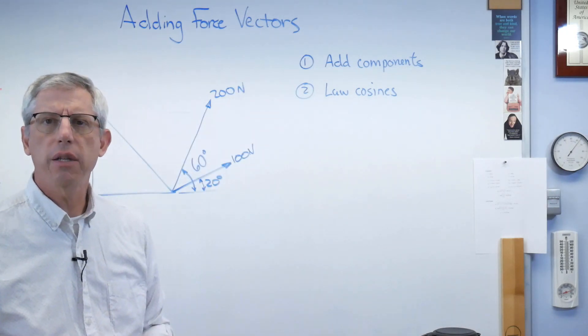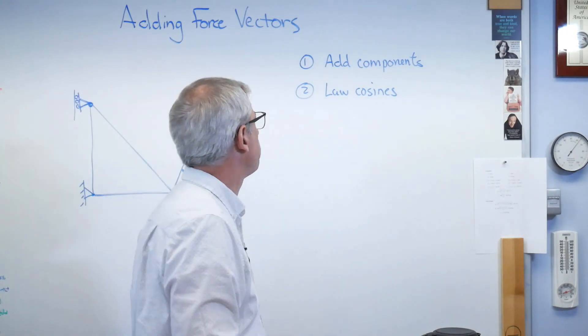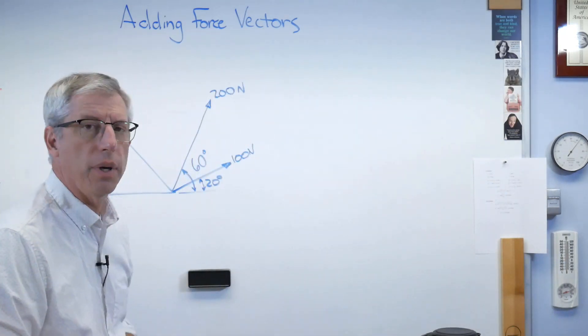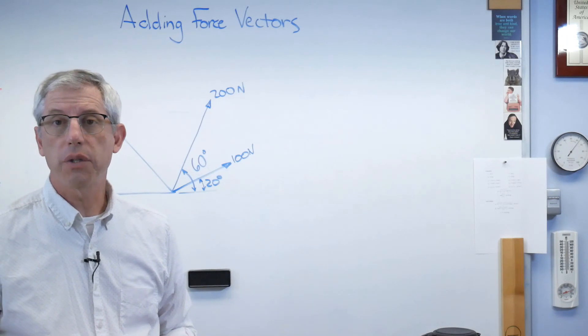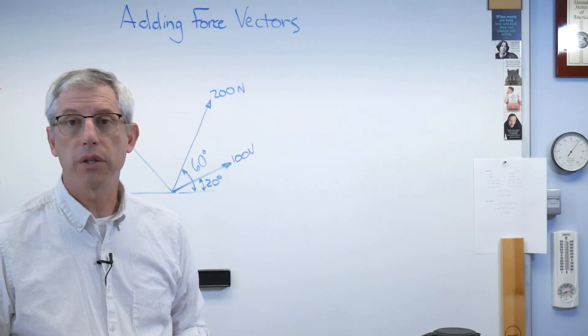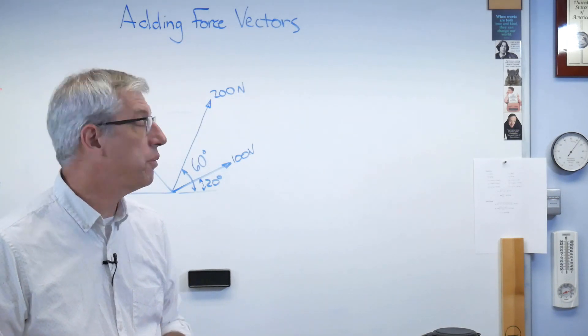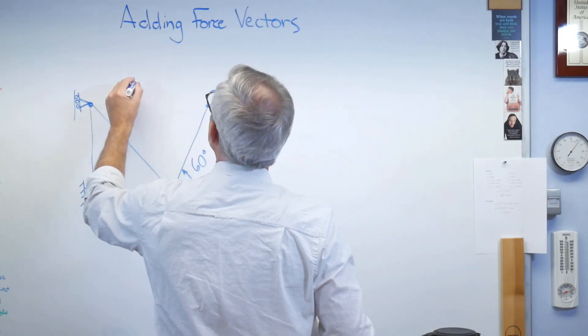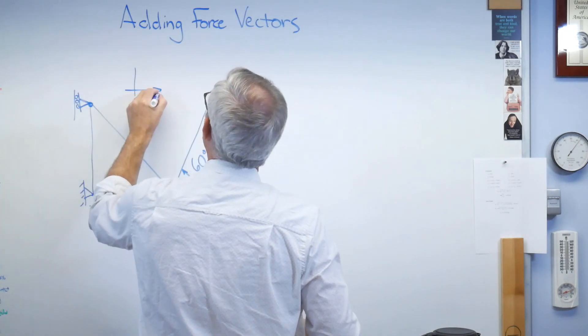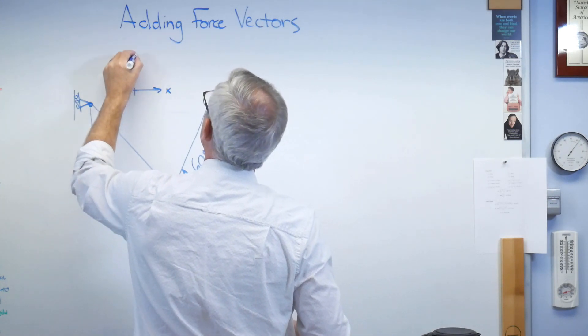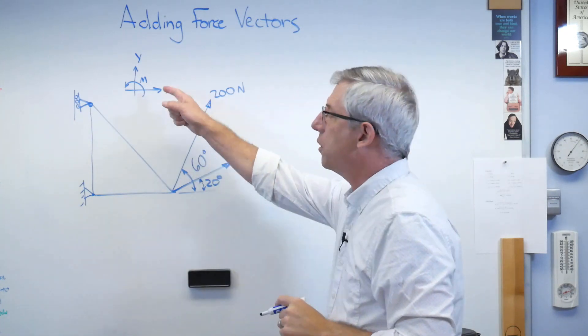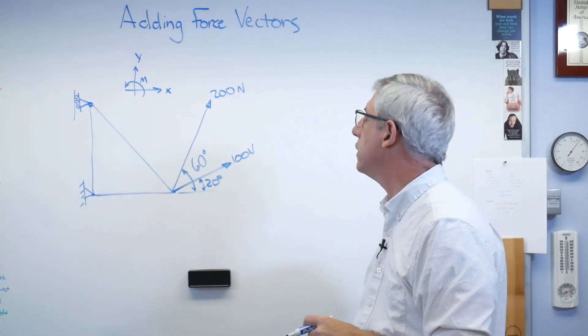So first, let's add components. Let's see how that works. Well, in order to solve this problem, we're going to want to sum forces in the two directions and some moments. That's the recipe for solving a statics problem. So we're going to need a coordinate system. Let's make that our coordinate system. So those are the positive sign conventions.